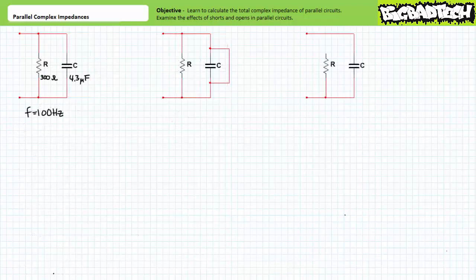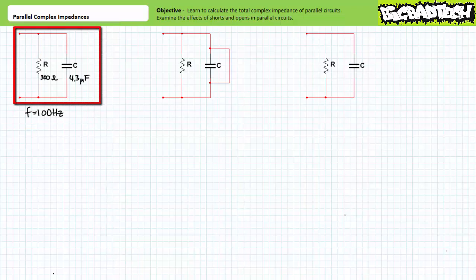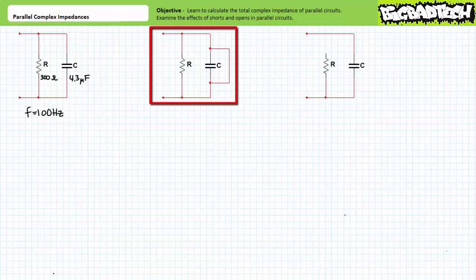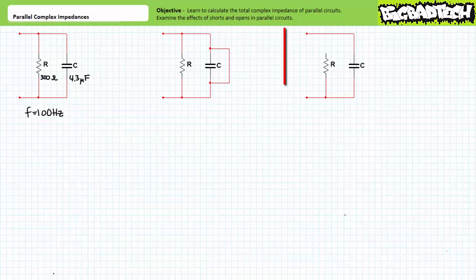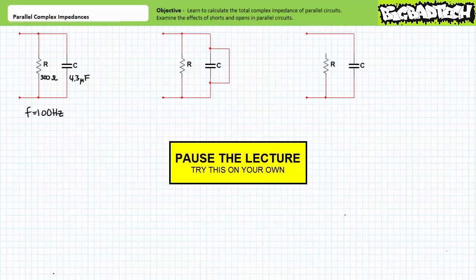Let's put your understanding of parallel impedance calculations including shorts and opens to the test with this example problem. Given this parallel circuit at a frequency of 100 hertz, calculate the resulting total impedance given ordinary conditions, the inclusion of a short at the following location, and the inclusion of an open at the following location. By all means, pause the lecture and try this on your own. Express all your final answers using proper engineering format and polar format with a magnitude and direction. If you're tracking, you should have obtained the following results.